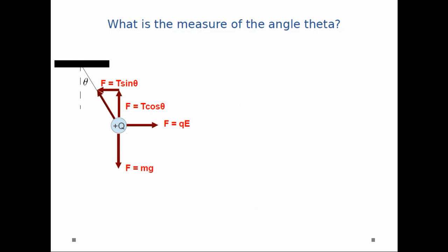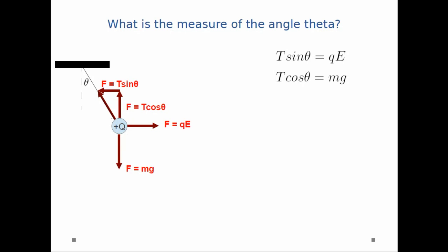So now that I've got all of my vectors defined, I can sum them up and make sure the sums are equal to zero. So, summing the horizontal components, we have T sine theta plus QE vector must equal zero, so therefore, T sine theta equals QE.